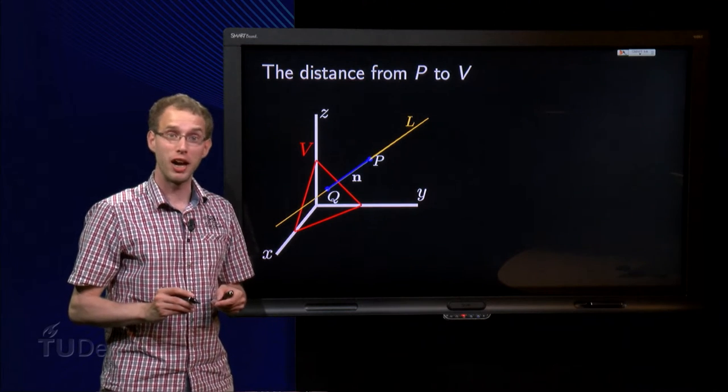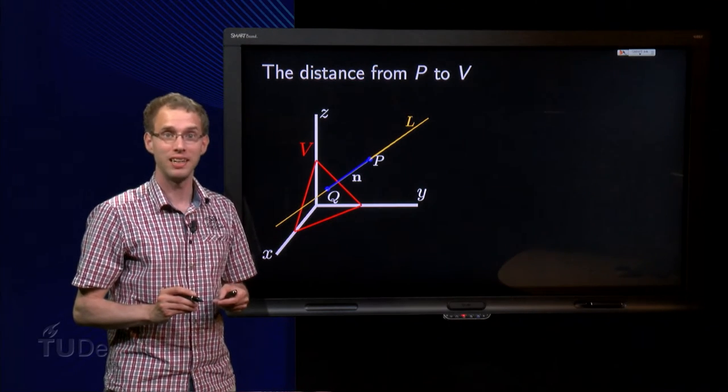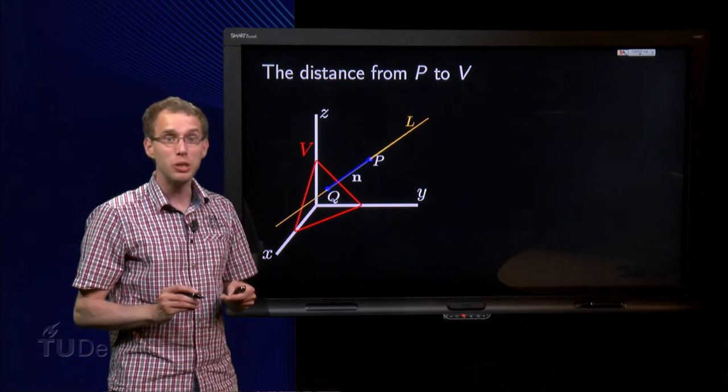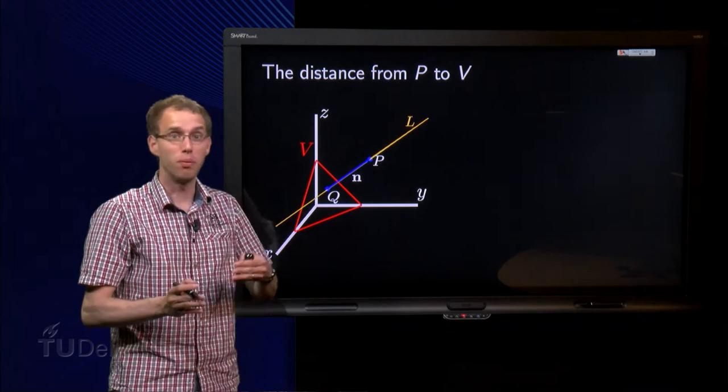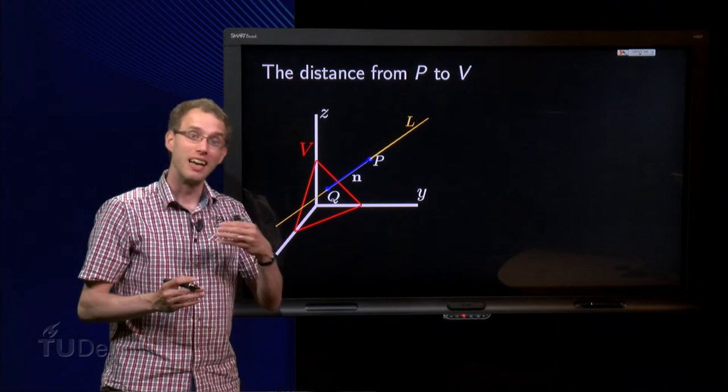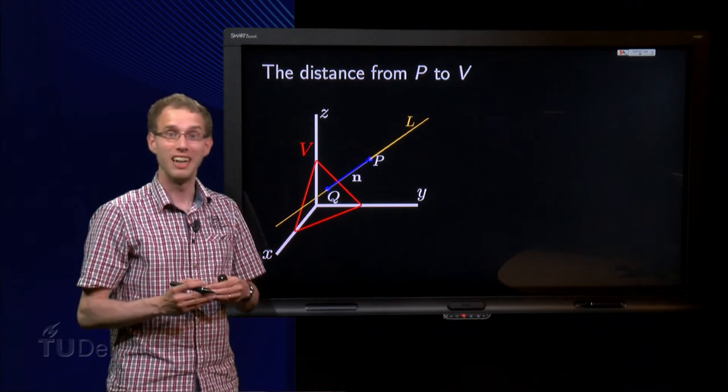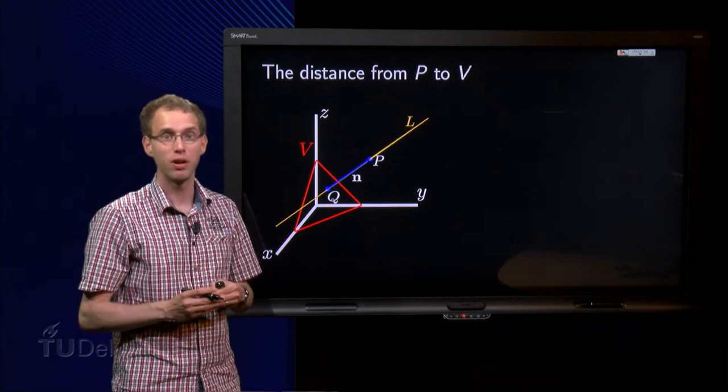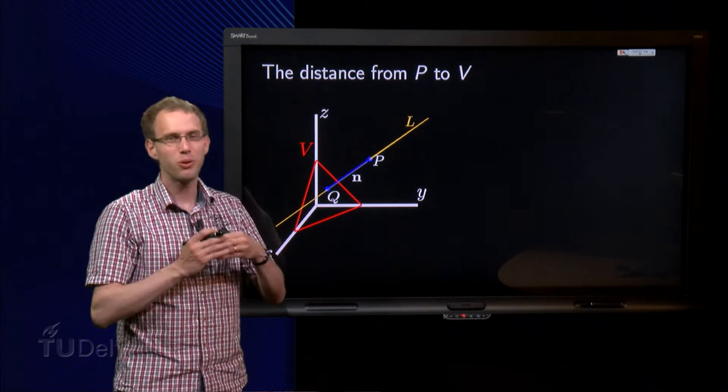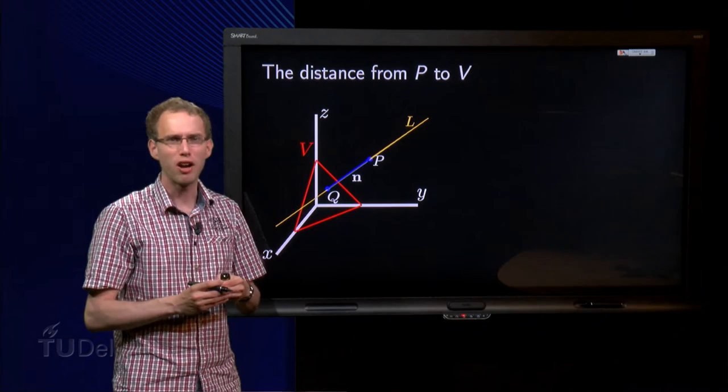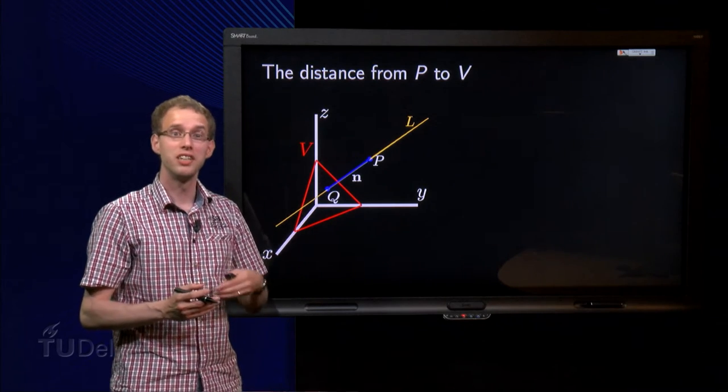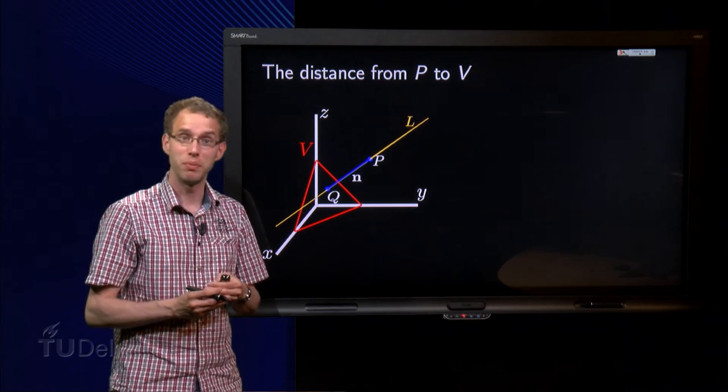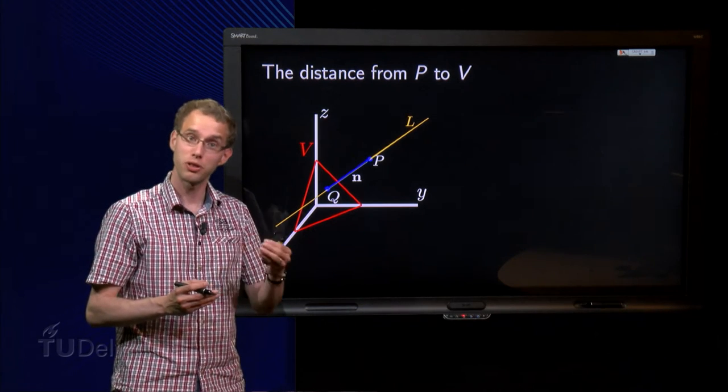We have learned how to describe planes and lines in 3D. Now we can use these descriptions to compute, for example, the distance from a point to a plane. Nice example of course, and also a nice application of what we have learned before. By the way, do not learn some formulas by heart from this example, but try to understand and follow the procedure, since you can apply the ideas to similar geometric problems you may encounter yourself.